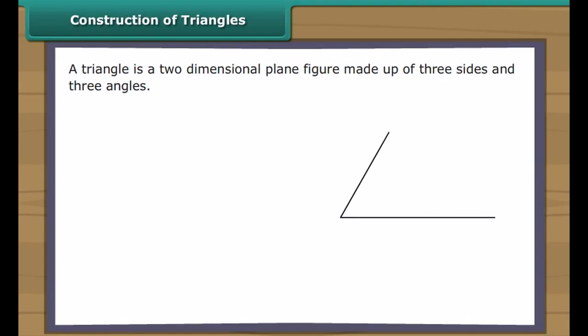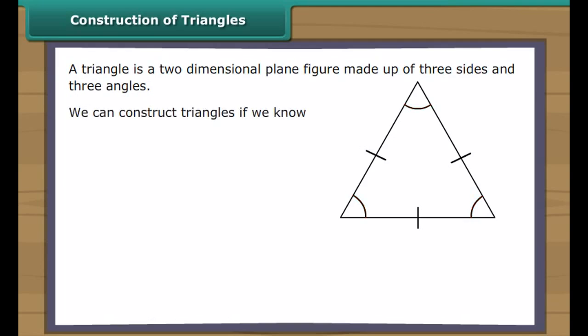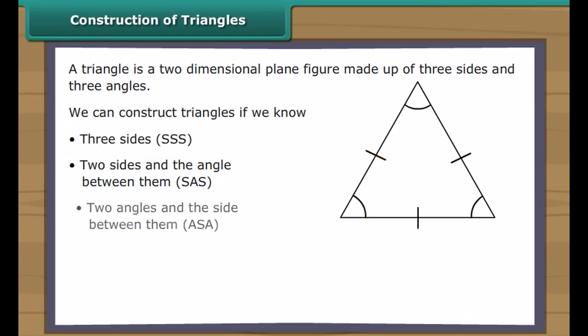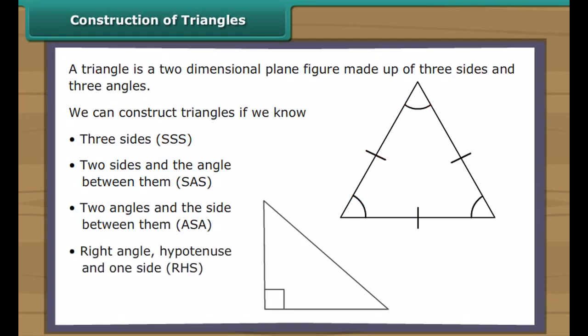Construction of Triangles. A triangle is a two-dimensional plane figure made up of three sides and three angles. We can construct triangles if we know: three sides (SSS), two sides and the angle between them (SAS), two angles and the side between them (ASA), or the right angle, hypotenuse, and one side (RHS). Let us learn to construct all four types of triangles.